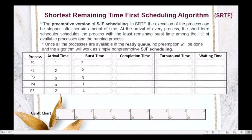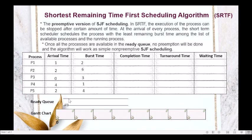In the Gantt chart, we start from time 0. At time 0, we check which process arrived in the ready queue. Looking at our table, we have one process — P3 — which arrived at time 0.